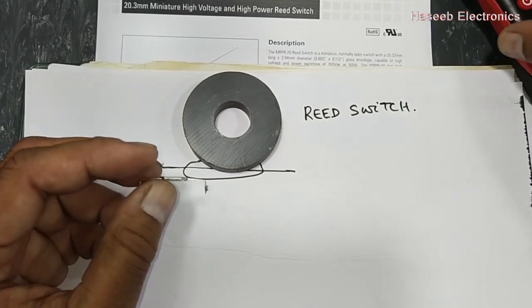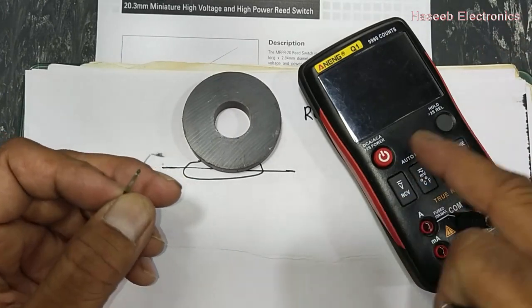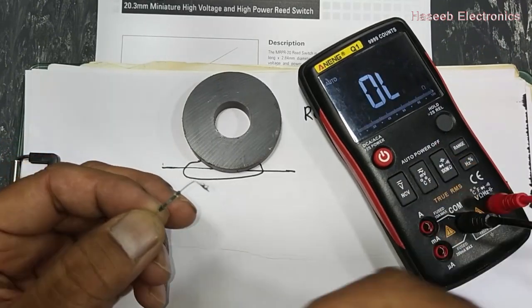So we can test it easily, just only set the multimeter to continuity or ohm mode.